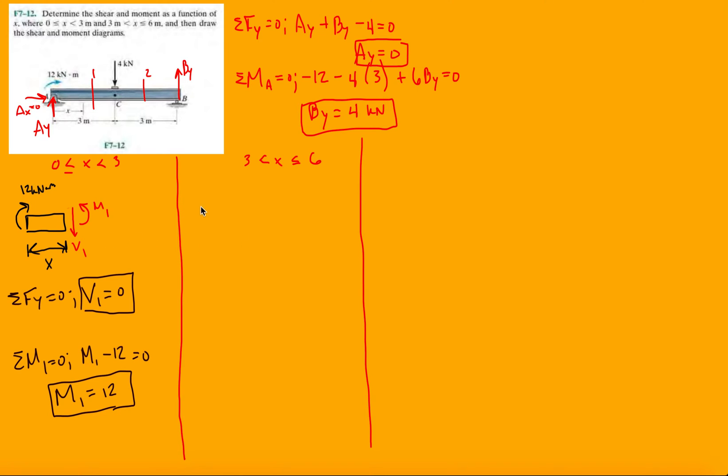There's two options: we can look at cut two and include the four kilonewton this way, or we can look at the right hand side here. We can either look at this side or we can choose to look at the left hand side, which is what we usually do. But since we're kind of getting used to the left hand side, let's do one with looking at the right side of the cut.